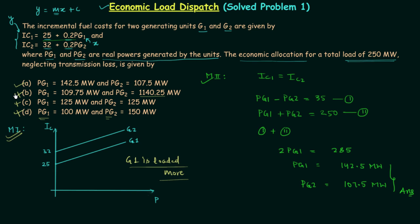And from method 2 also we are getting option A as the correct answer. But here we have the exact values of PG1 and PG2, 142.5 and 107.5. So this is all for this lecture. If you have any doubt you may ask in the comment section. In the next lecture also we will solve one problem based on economic load dispatch.